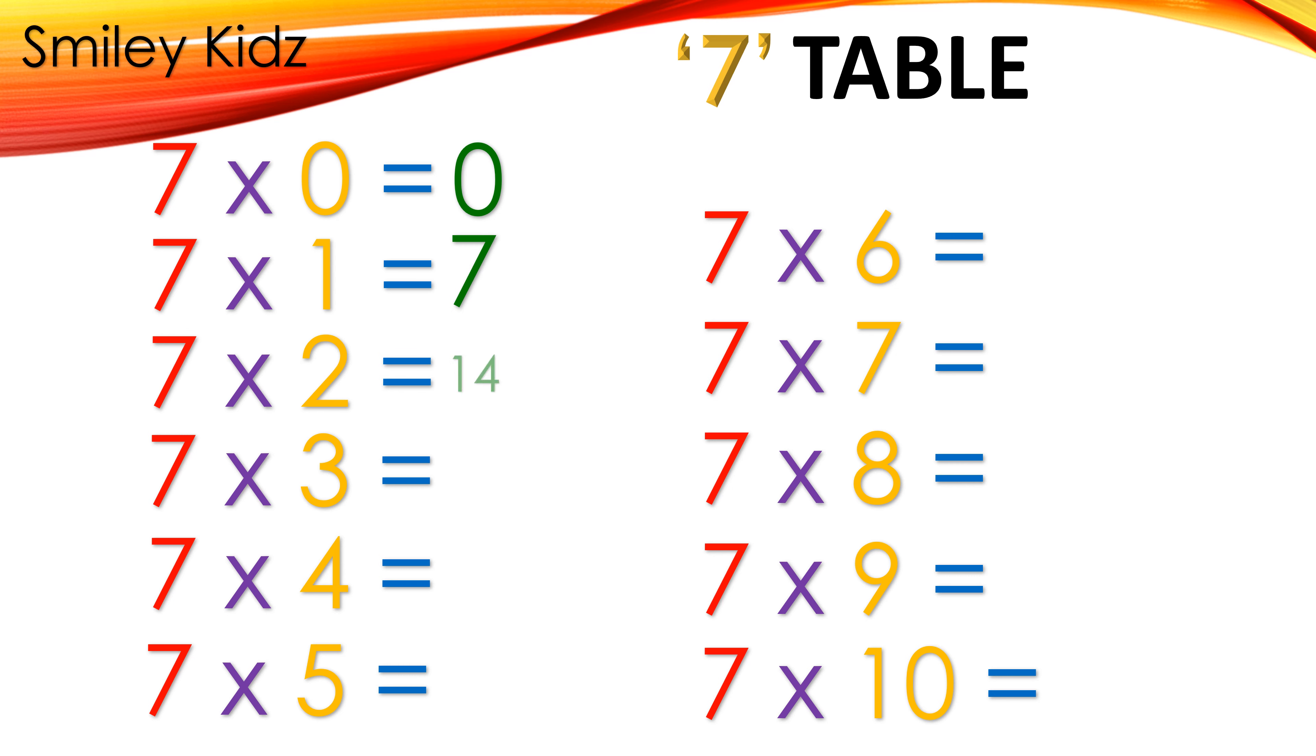7 table: 7 times 2 is 14, 7 times 3 is 21, 7 times 4 is 28, 7 times 5 is 35, 7 times 6 is 42, 7 times 7 is 49, 7 times 8 is 56, 7 times 9 is 63, 7 times 10 is 70.